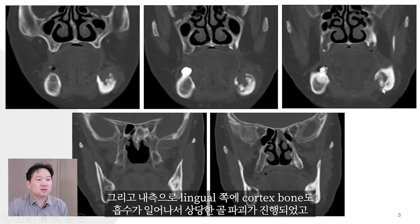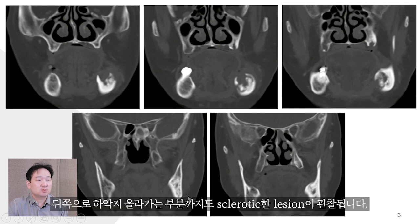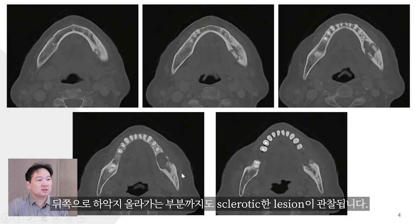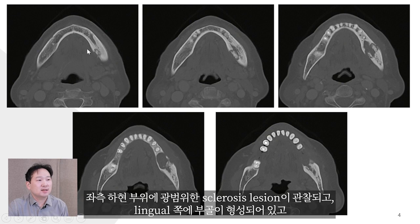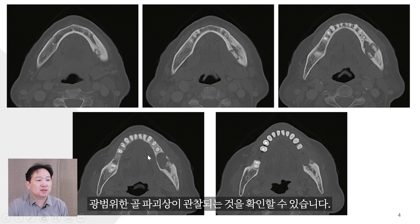The center of the bumbus and ventus shows a nuclear region. The line above will be a sclerotic region. On the X-ray, similarly on the left side, a widespread sclerotic region is observed with lingual sequestrum formation and widespread bone destruction.